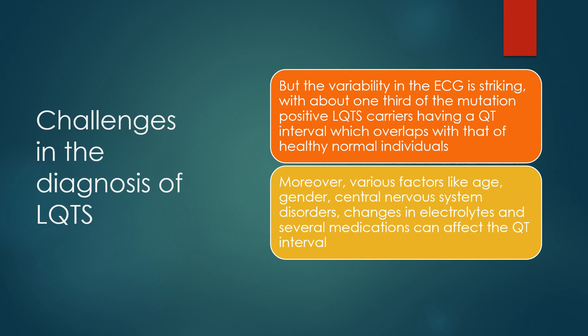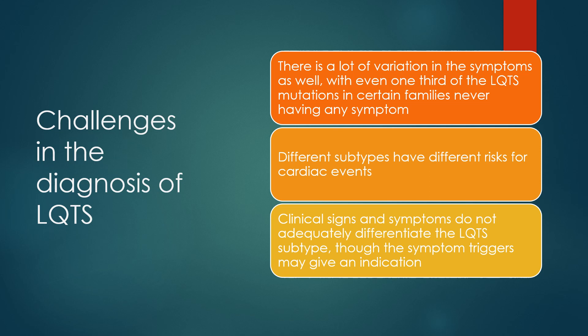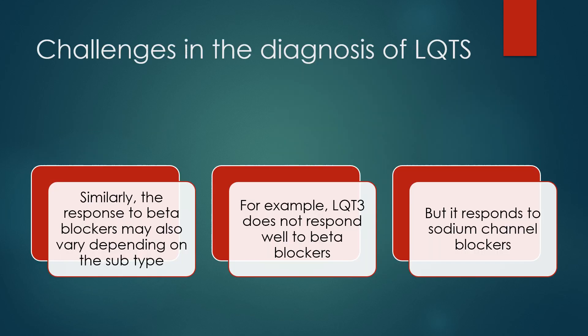There is significant variation in symptoms, with even one third of LQTS mutations in certain families never producing any symptoms. Different subtypes have different risks for cardiac events; clinical signs and symptoms do not adequately differentiate the LQTS subtype, though symptom triggers may offer an indication. The response to beta blockers varies by subtype — for example, LQT3 does not respond well to beta blockers but responds to sodium channel blockers. The term concealed long QT syndrome indicates individuals with the genotype but a normal QT interval, usually detected on family screening.